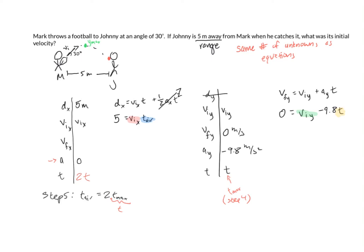So let's go ahead and do that. Put that in our equation. We get 5 equals v initial x times 2t. So that's one unknown dealt with. So now we have two equations and three unknowns.